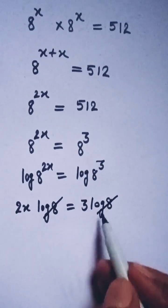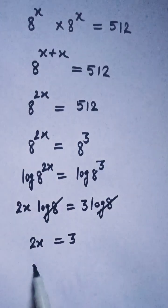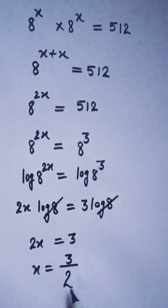Now the log 8 terms can be cancelled. We have 2x equals 3, hence x equals 3 by 2 is the solution.